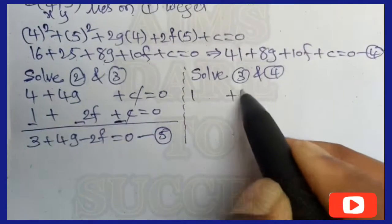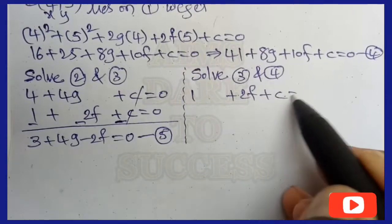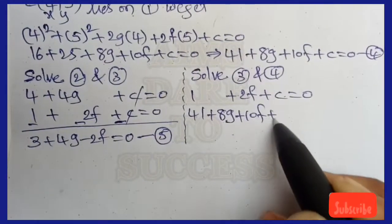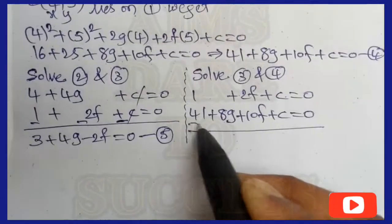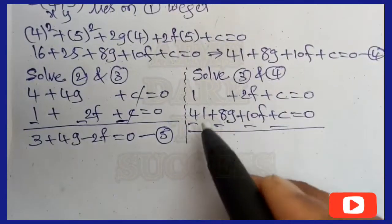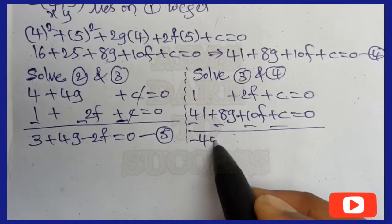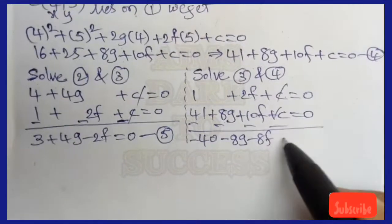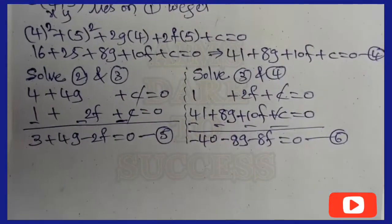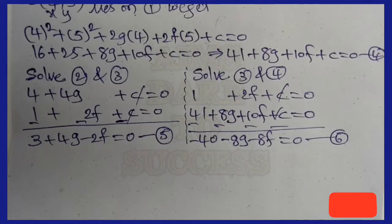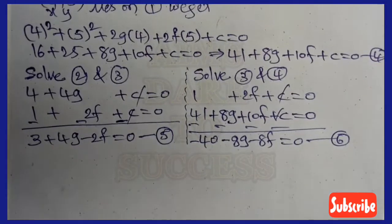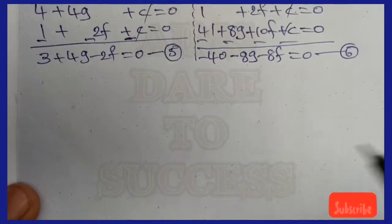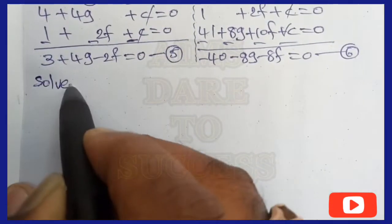Next, solve Equations 3 and 4: Equation 3 is 1 + 2f + c = 0, Equation 4 is 41 + 8g + 10f + c = 0. Subtracting to remove c: 1 − 41 − 8g + 2f − 10f = 0, giving −40 − 8g − 8f = 0. Let this be Equation 6.